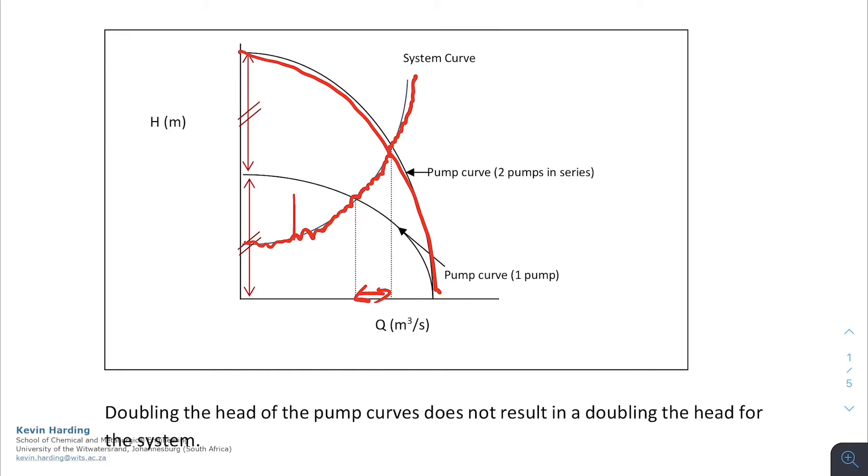The only way that would happen is if our pump curve was perfectly vertical, which is never going to be the case. And no matter what sort of pump curve I draw in here, or system curve rather, you'll see that the system will never double the head. It will have a higher head though, as well as a slight increase in the velocity or the volumetric flow rate.